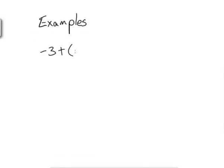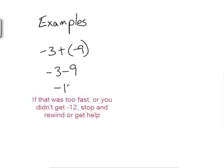All right, so let's try a few examples. Let's try them without the number line, just understanding which direction to go. Let's say we have negative 3 plus negative 9. Well we know that that's negative 3 minus 9. So I start at negative 3, go back 9, and that puts me at negative 12.